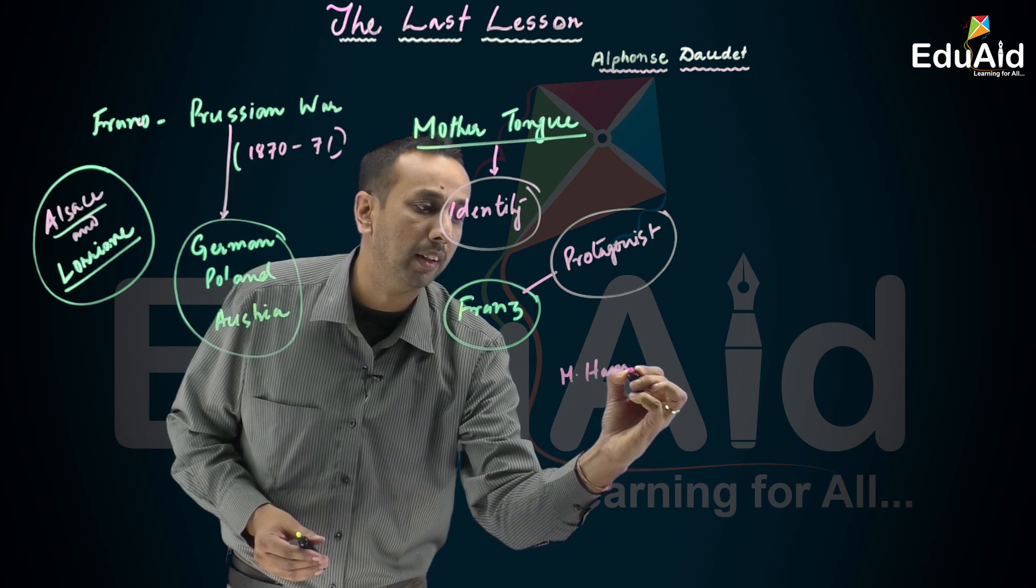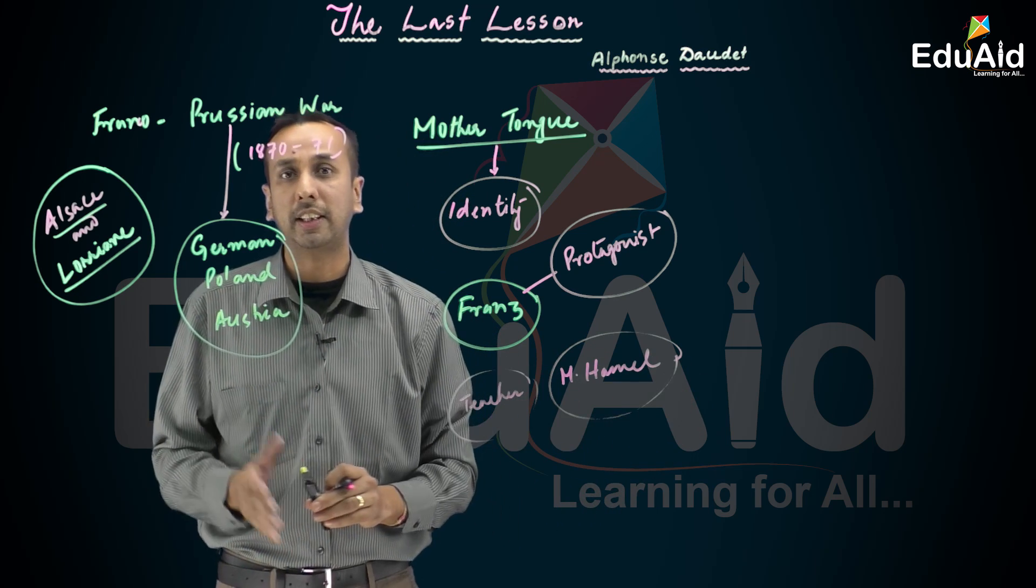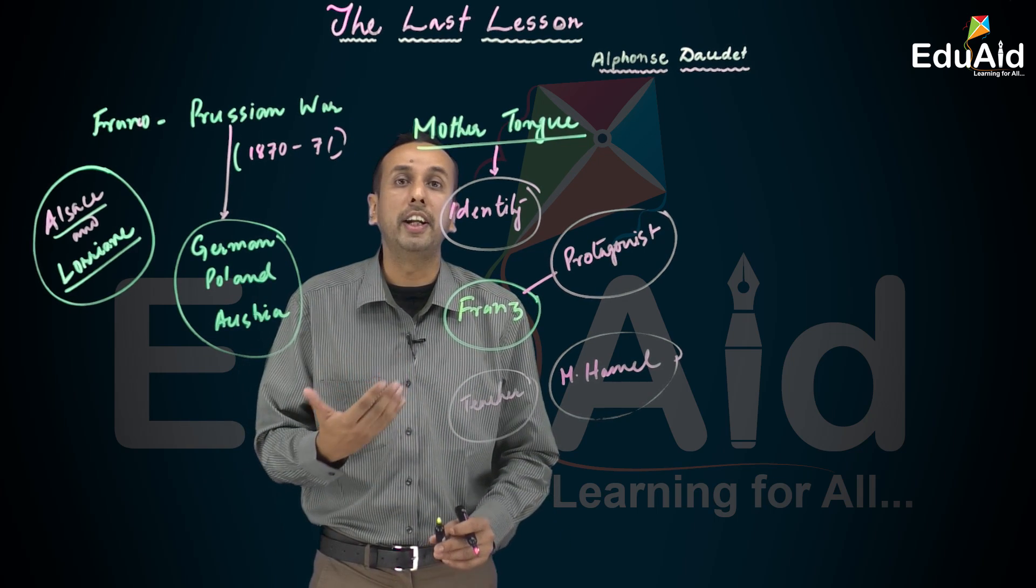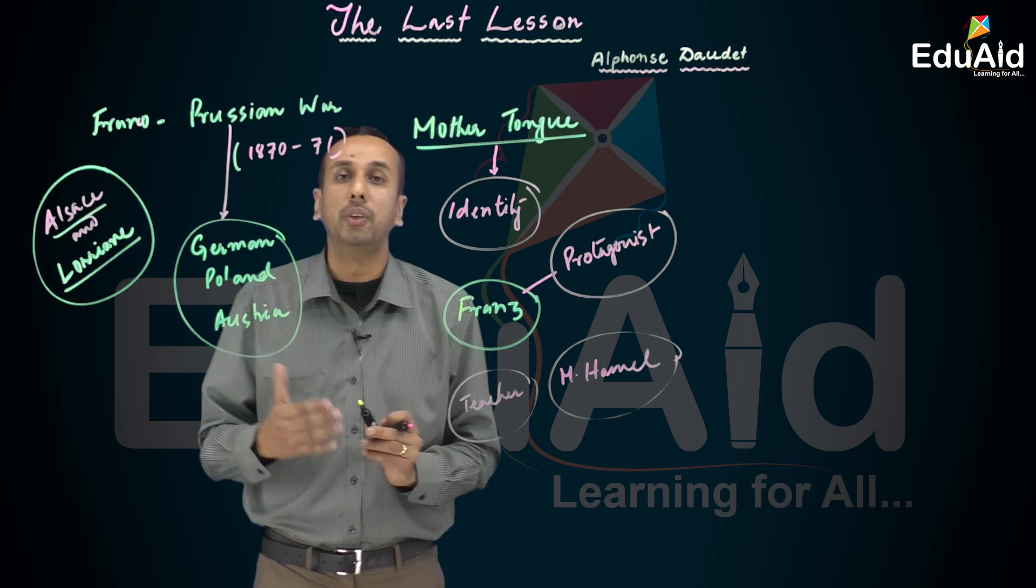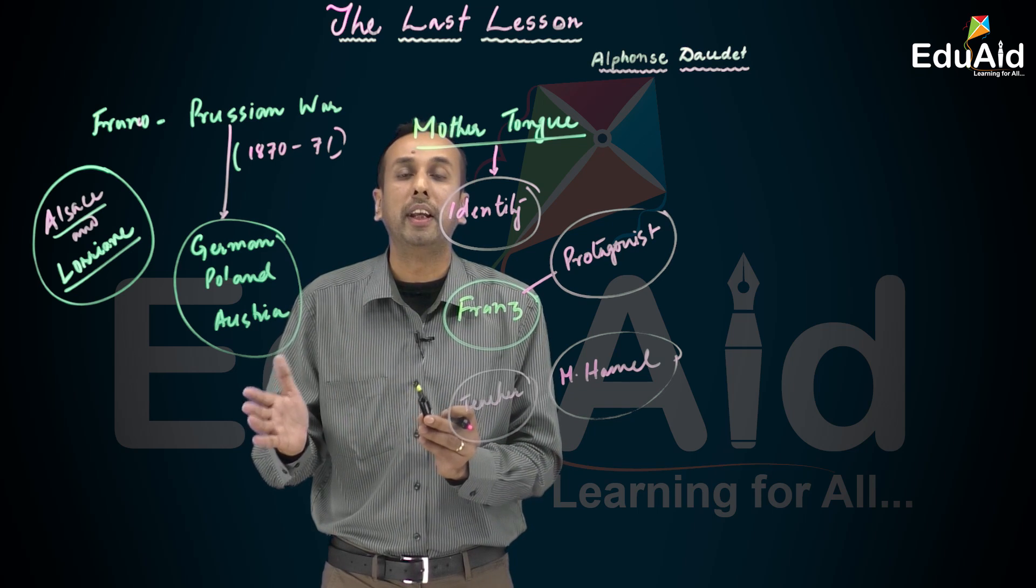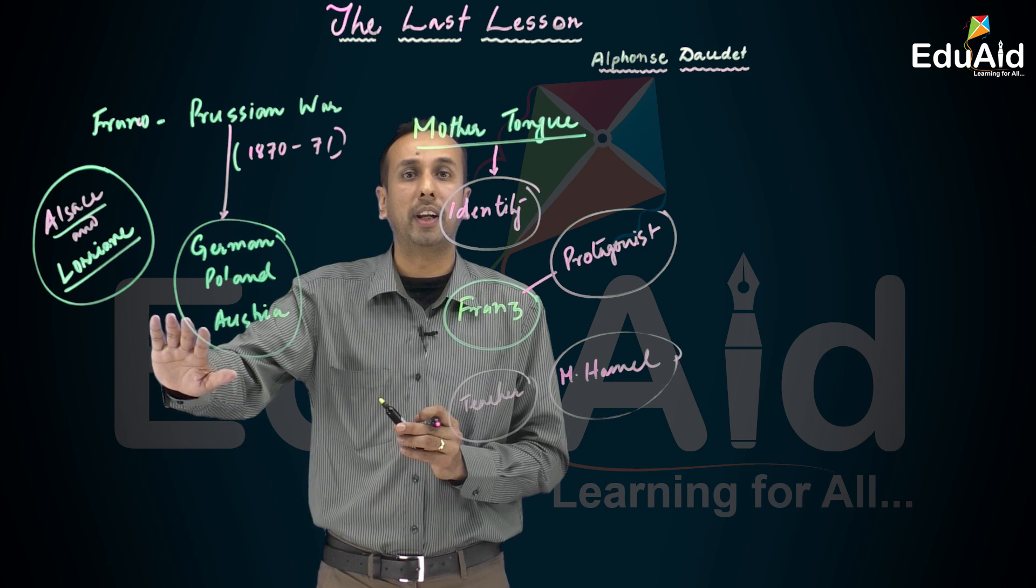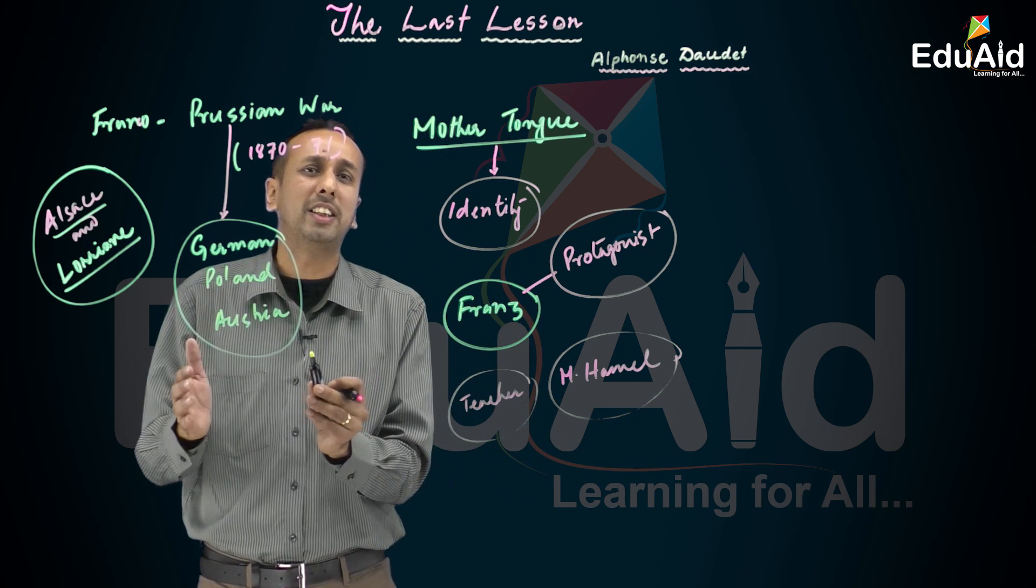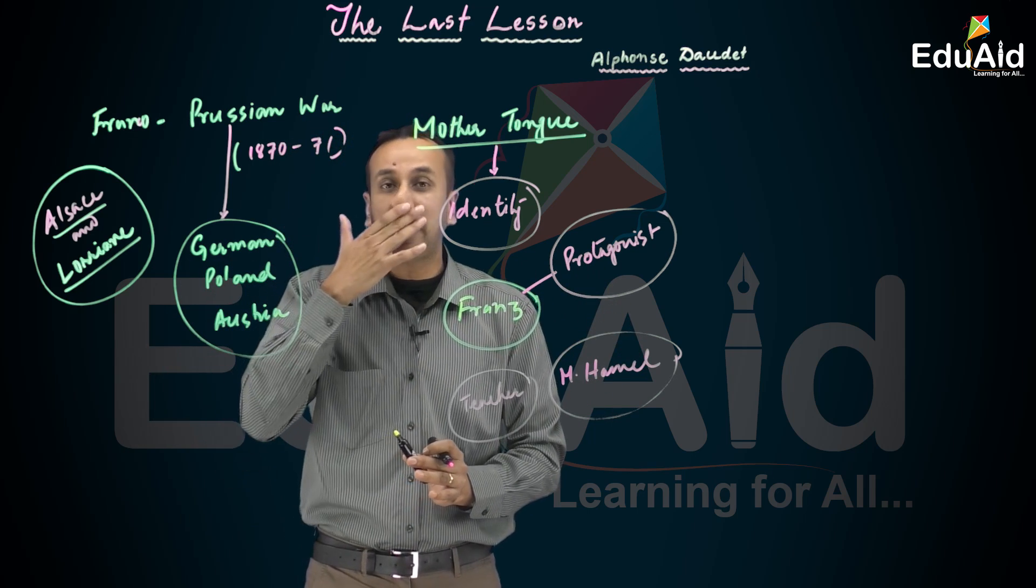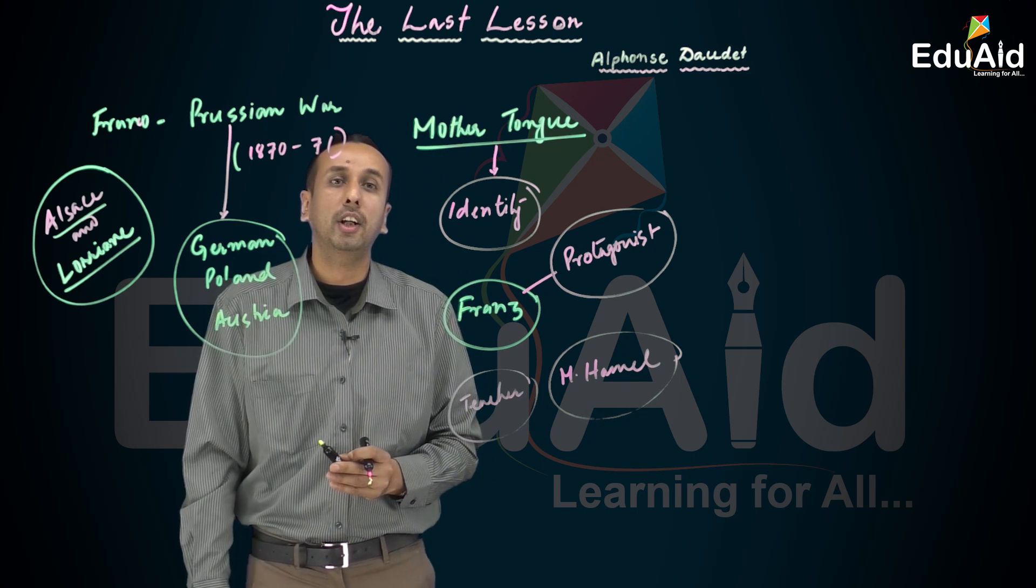Their teacher, M. Hamel, had given homework on rules on participles, grammar. He was in great dread of scolding, and the weather was also very bright, birds were chirping, soldiers were drilling. For a village boy these things were much better than the rules of participles, but still somehow he resisted his temptation and had to run to school.